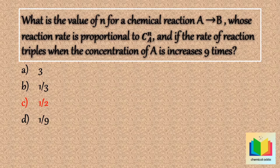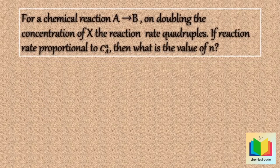Now the next question. For a chemical reaction A gives B, on doubling the concentration of A, the reaction rate quadruples. If the reaction rate is proportional to cA raised to n, then what is the value of n?